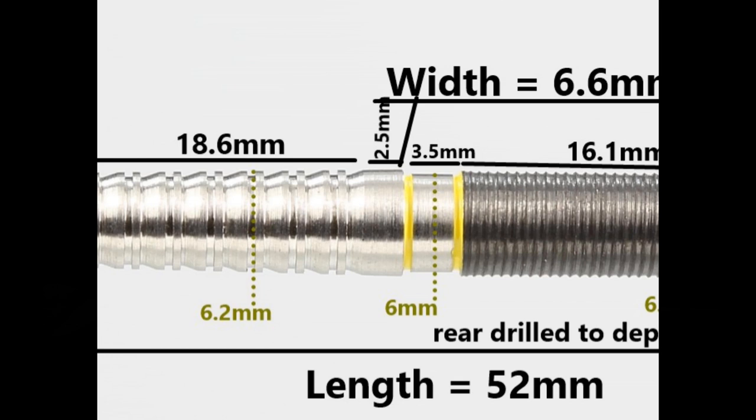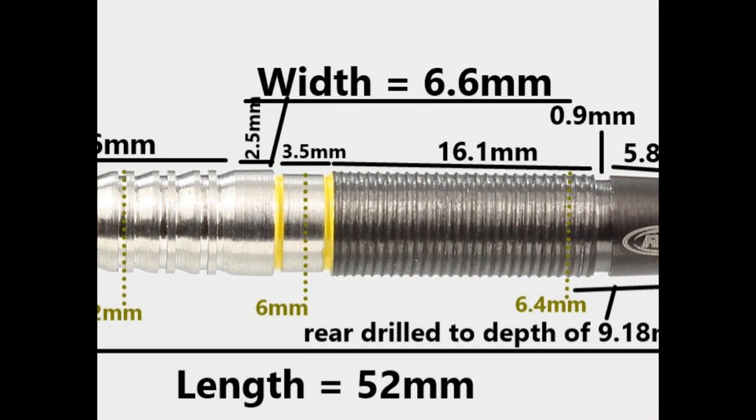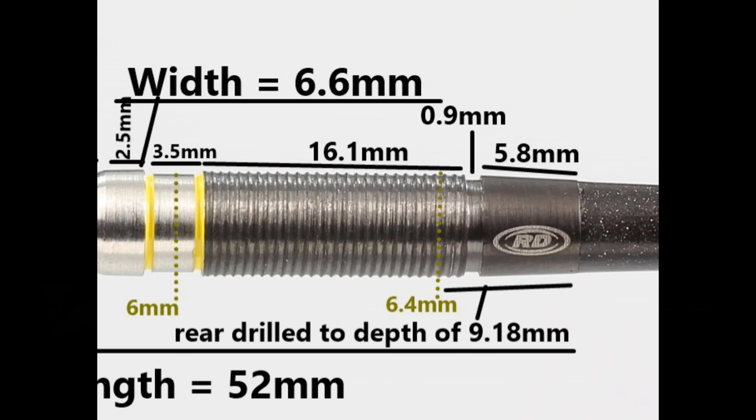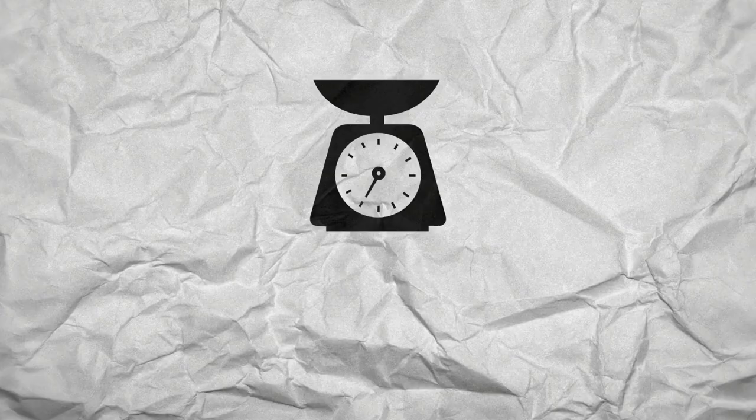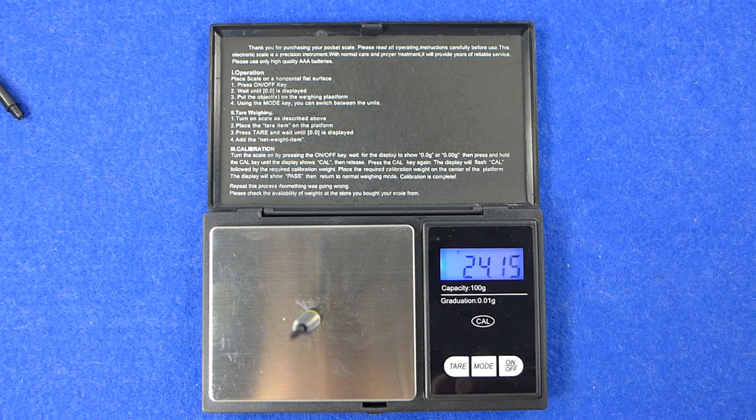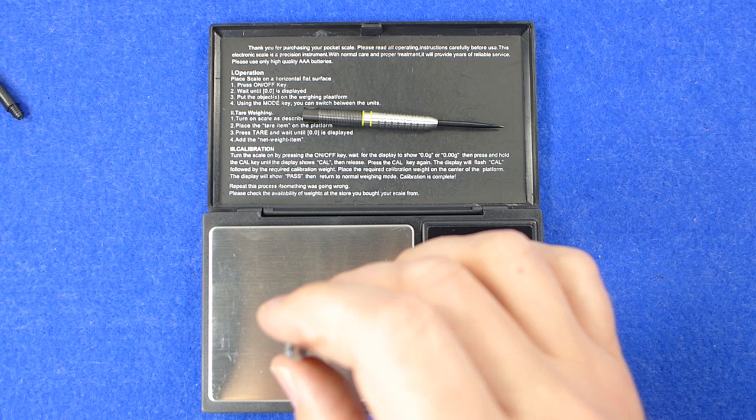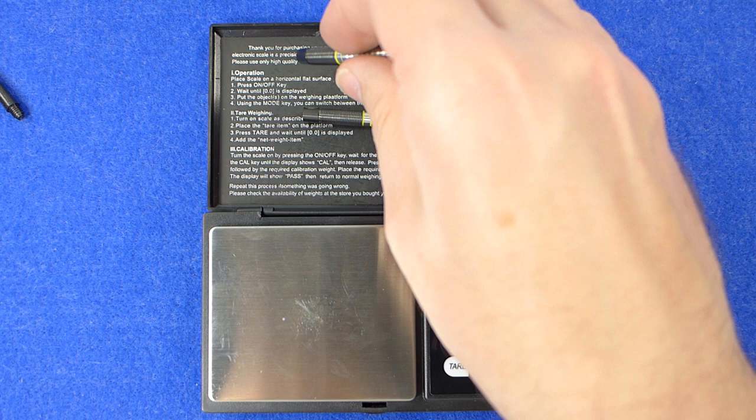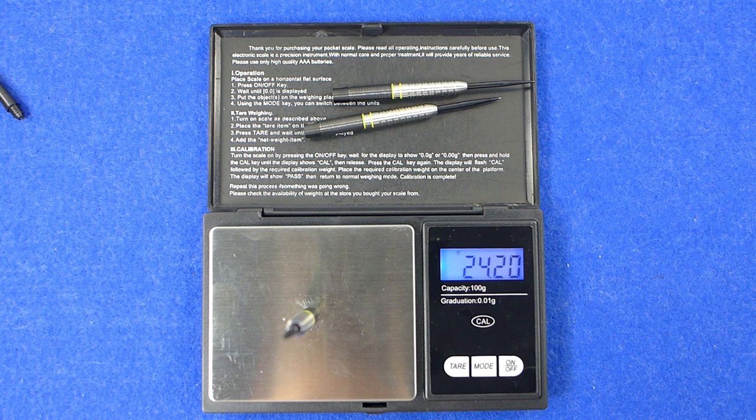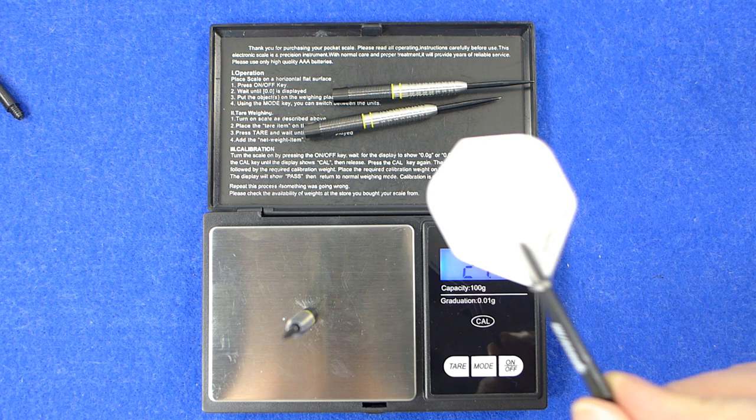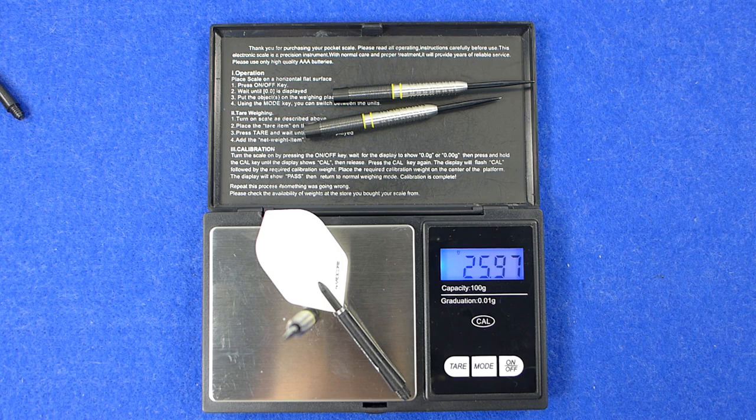Then on the rear you've got this micro grip of 16.1 millimeters with the black coating, then there's a groove of 0.9 millimeters and then a smooth section of 5.8. The length is 52 millimeters and the width is 6.6 millimeters. 24.13 grams, 24.16 grams, 24.2 grams, and the full 24.19 grams. The full setup is 25.97 grams.